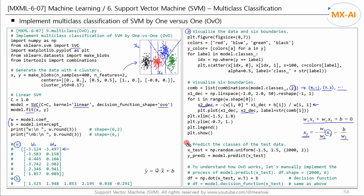Next, let's predict the classes of the test data. To visually check the decision boundaries, we randomly generate 2,000 test data points and predict their classes. We call the predicted classes YPRED1. If the number of classes is more than 2, the SVC model automatically performs multi-class classification. However, here we will manually implement the predict function of the SVC model to better understand how OVO works.